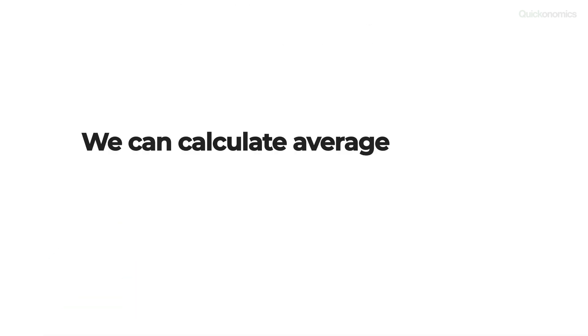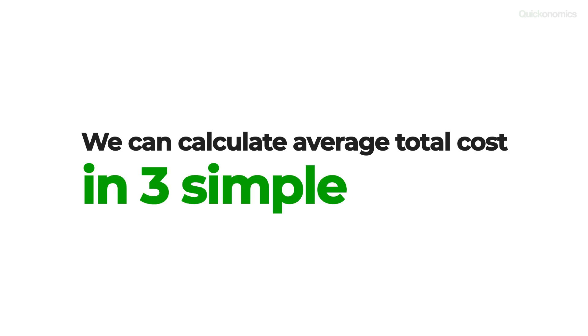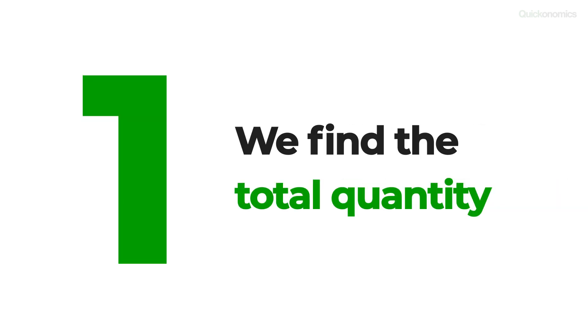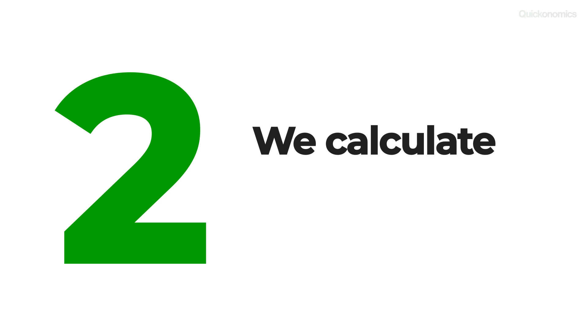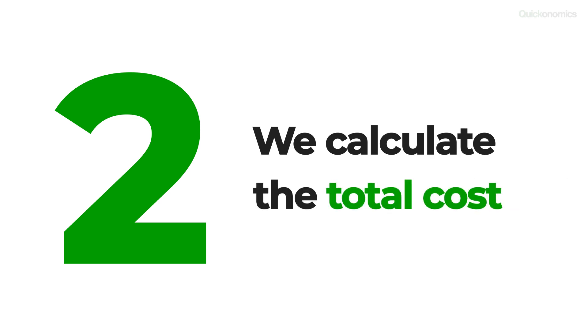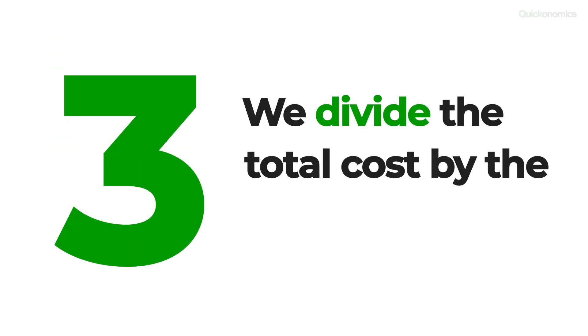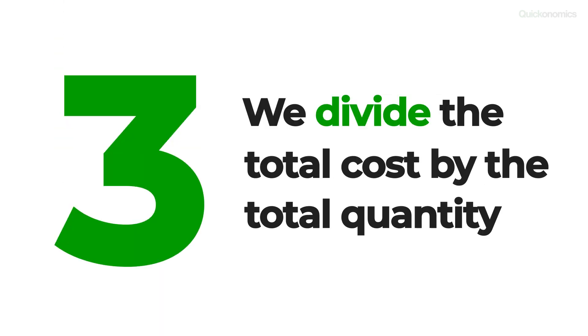Fortunately, that's pretty simple. We can calculate average total cost by following three simple steps. First, we find the total quantity. Second, we calculate the total cost. And third, we divide the total cost by the total quantity.